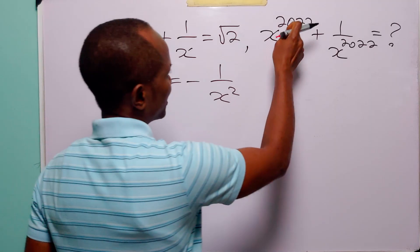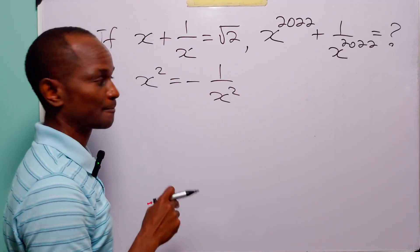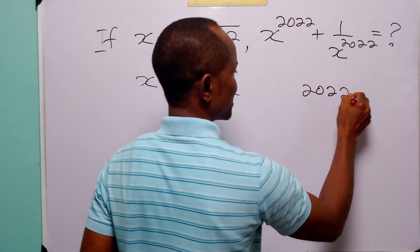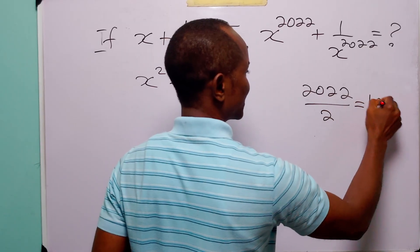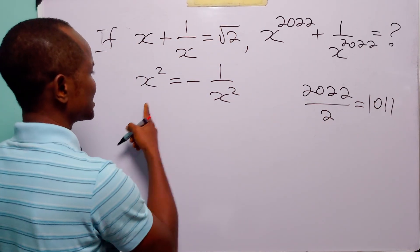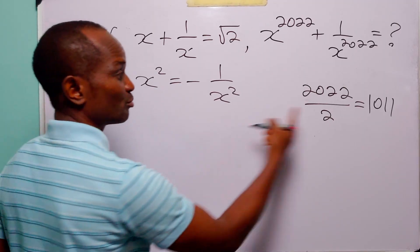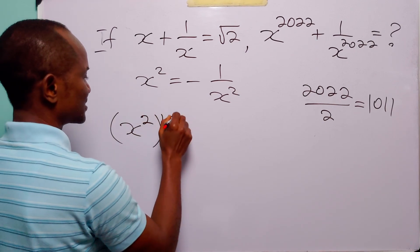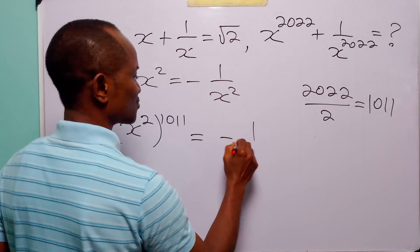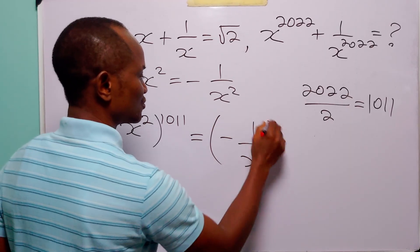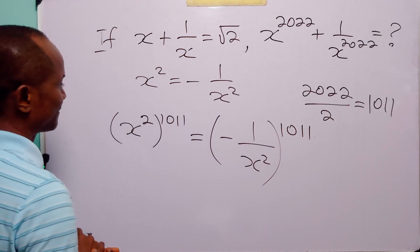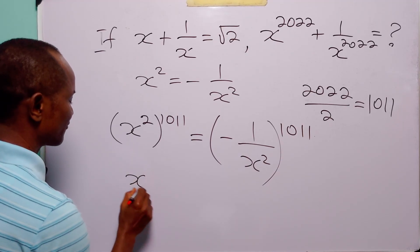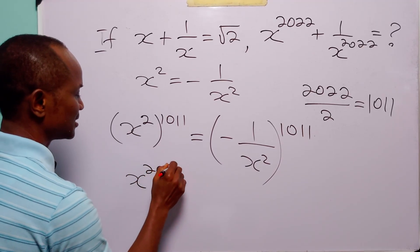Now we are looking for the value of x to the power 2022. We already have the value of x to the power 2, and 2022 divided by 2 is equal to 1,011. So the next thing we are going to do is raise both sides of this equation to the power 1,011. Here we have x squared to the power 1,011 is equal to minus 1 over x squared to the power 1,011. When we have two powers like this, all we have to do is multiply them, giving us x to the power 2,022.